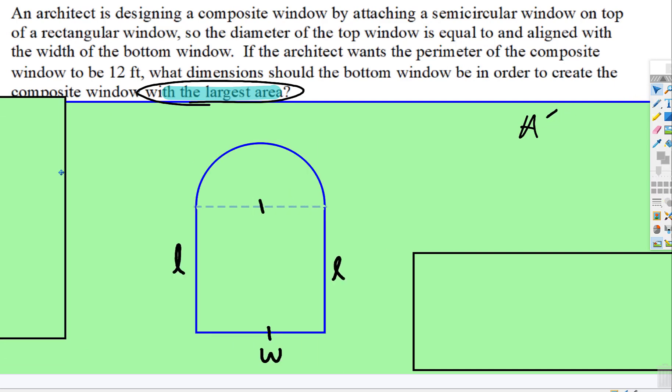But let's do the setup. Here's the semicircular part of the window and here's the rectangle. That dashed line, that's not material of the 12 feet.